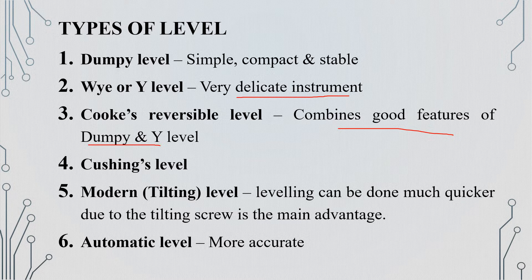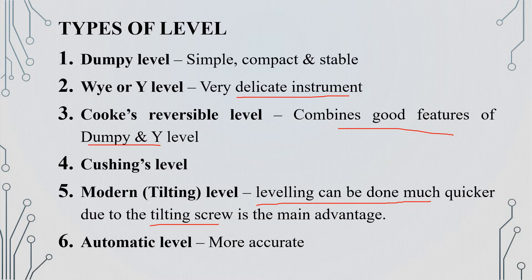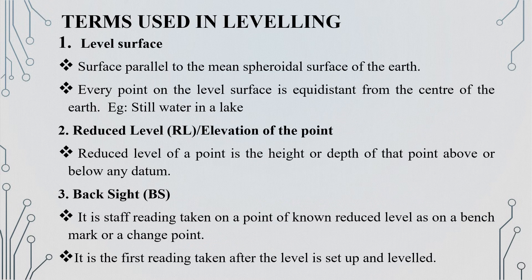The next type is Cushing's Level, which is a modern tilting level. This is the main advantage — it will be easy to use. The pattern will be leveled using the tilting screw. The next type is the Automatic Level.